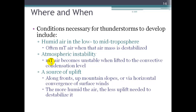Thunderstorms happen whenever conditions are right. One key condition is humid air in the low to mid troposphere — often a maritime tropical air mass — which destabilizes the atmosphere. That warm, moist air underneath relatively cooler air aloft causes instability and convection. The warm moist air lifts to the convective condensation level, clouds form, and if there's additional uplift from a mountain slope, convergence of surface winds, or a front, thunderstorms are likely to develop.